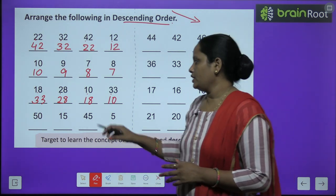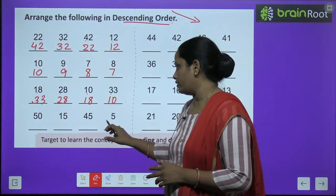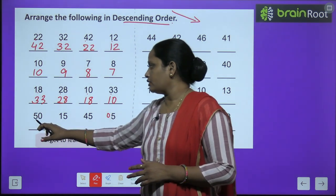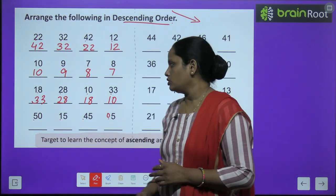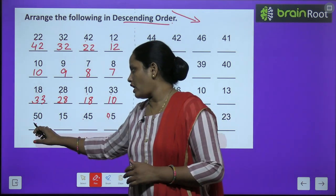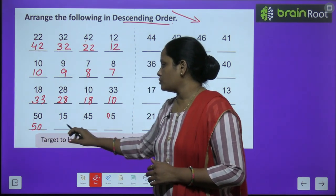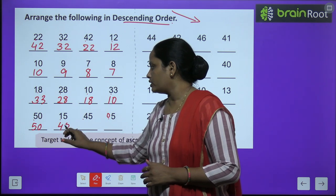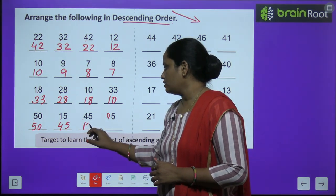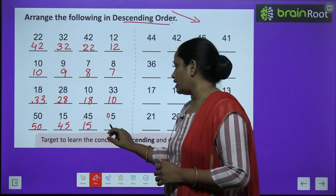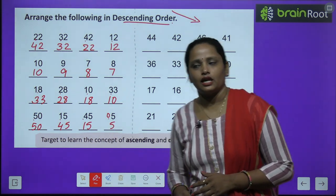Similarly, fifty, fifteen, forty-five and five. Toh jaldi se yahan par dekhte hain: five, one, four, zero. Toh sabse bada hai five. Likh diya. Phir usse chhota hai four. Likh diya. Ab usse chhota hai one. Likh diya. Aur sabse chhota hai zero. Likh diya.